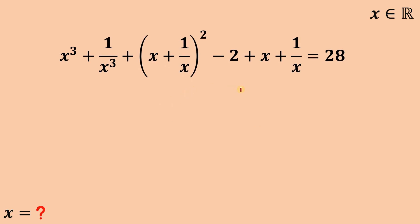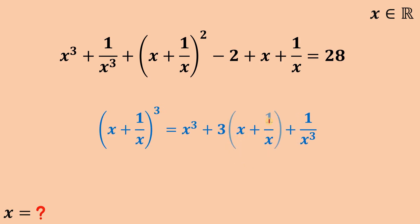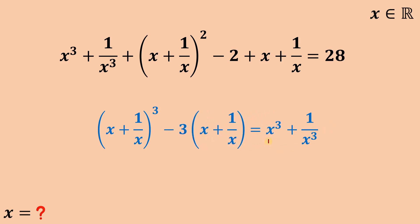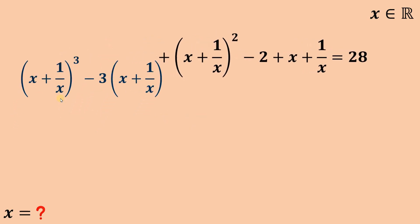And another thing: if we cube x plus 1 over x, we get x cubed plus 3x plus 3 over x plus 1 over x cubed. Focusing on the middle terms and factoring out 3, we have 3 multiplied by x plus 1 over x. Rearranging to get x cubed plus 1 over x cubed, we get x plus 1 over x raised to the power of 3 minus 3 multiplied by the quantity x plus 1 over x. So we can replace this expression with its equivalent consisting of x plus 1 over x.